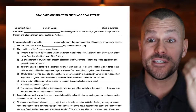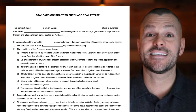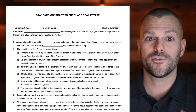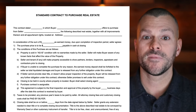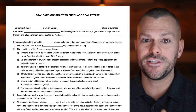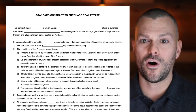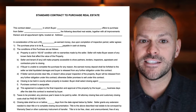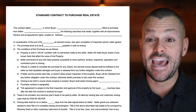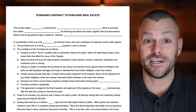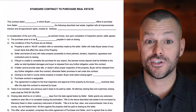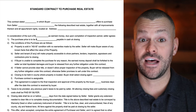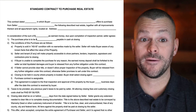Next it reads 'offers to purchase from seller' — and then goes the seller's name. Don't overthink this, keep it simple, there's no reason to complicate it. Then 'the following described real estate together with all improvements thereon and all appurtenant rights located at the address' — so the property address you are wanting to purchase goes on that third line.